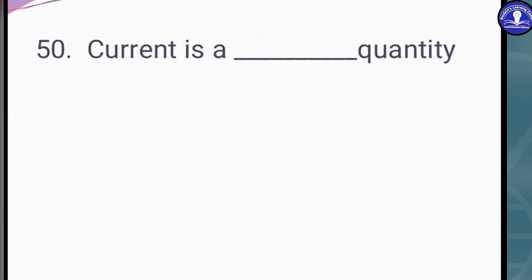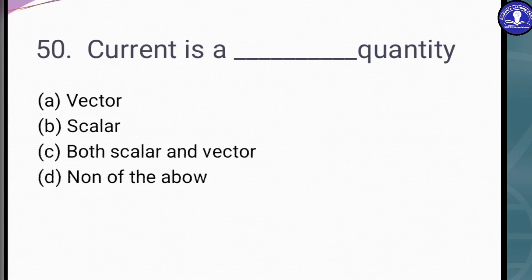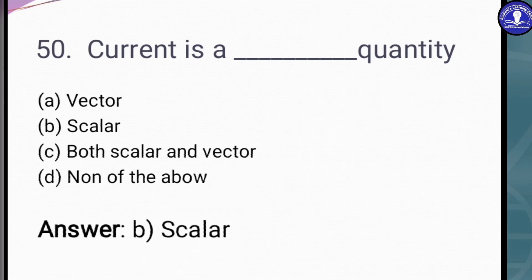That is our last question. Current is a what quantity? Let's see the options - vector, scalar, both scalar and vector, or none of the above. The answer is option B - scalar. Current is a scalar quantity. Thank you for watching.